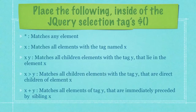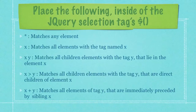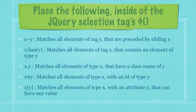The third bulleted item will match all children elements with the tag Y that lie in the element X. The fourth matches all children elements with the tag Y that are direct children of the element X. And finally, this will match all elements of tag Y that are immediately preceded by a sibling of type X. This code will match all elements of tag Y that are preceded by a sibling X.